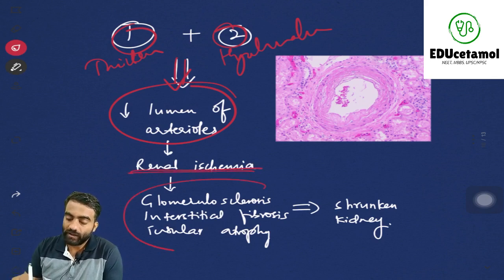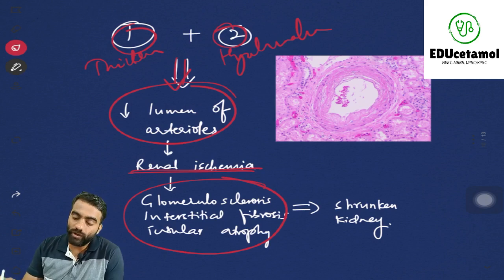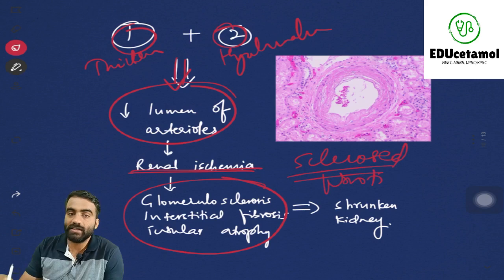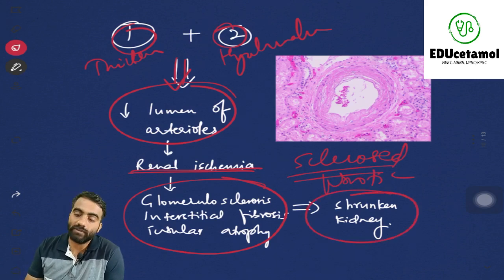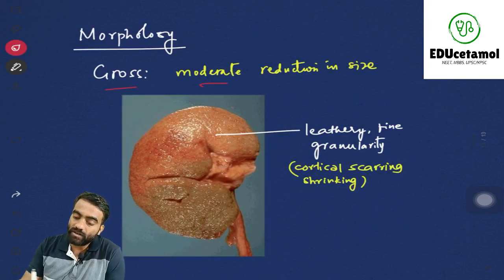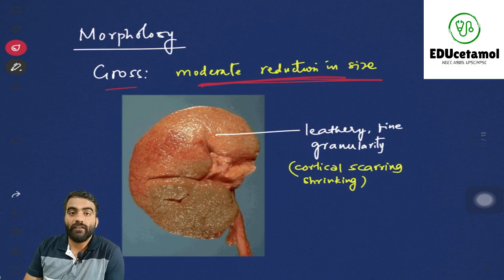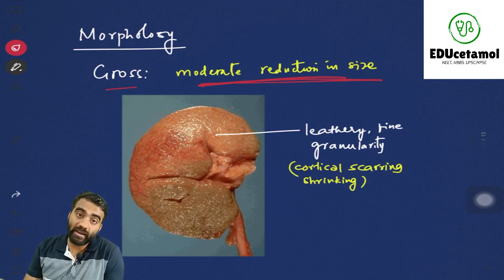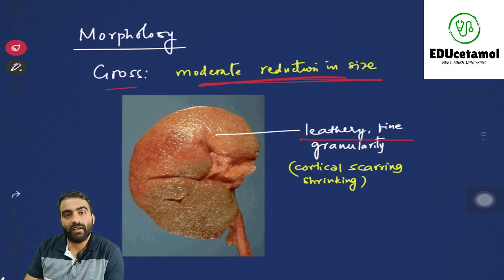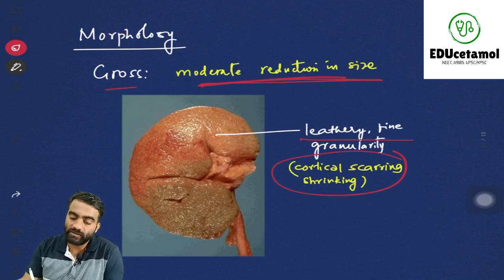Reduced lumen results in renal ischemia. Chronic ischemia causes infarction, and the infarcted area is replaced not with original tissue but with sclerosed or fibrotic tissue — so there is glomerulosclerosis, sclerosis in the interstitium, and the tubules get damaged. Finally the kidney becomes shrunken. In terms of morphology, there is moderate reduction in size. The appearance will be leathery with fine granularity due to cortical scarring from small renal infarctions caused by damage to the renal arterioles.